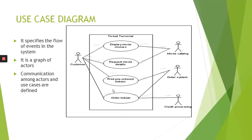The next one is use case diagram. It specifies the flow of events in the system. It is a graph of actors. Here you can see the customer, the movie catalog, the order system and credit processing — these are the actors. In this use case diagram, we are representing the communication among these actors and the use cases are defined.